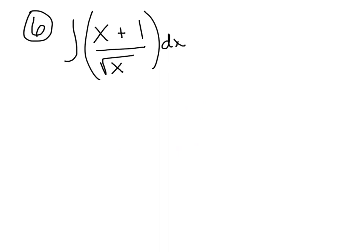Question 6. There's no product rule or quotient rule for integrating yet, so we practice rewriting. When I see one term on the bottom, we need to split. So I take x divided by x to the 1 half, plus 1 divided by x to the 1 half, dx. I've done zero calculus — just some basic algebra.